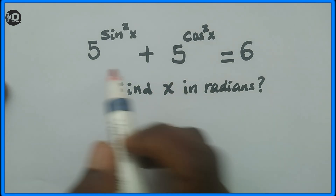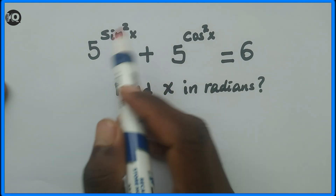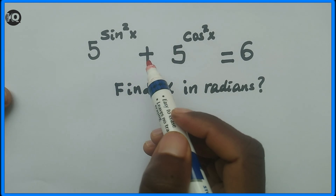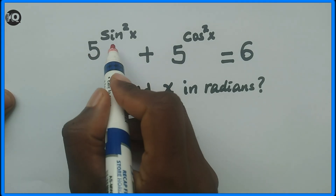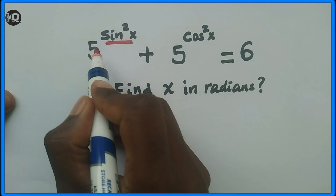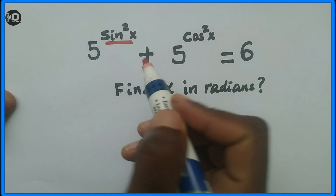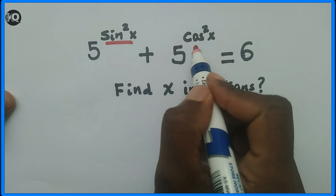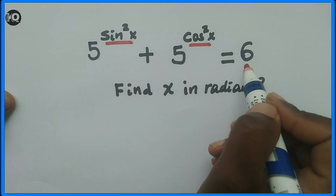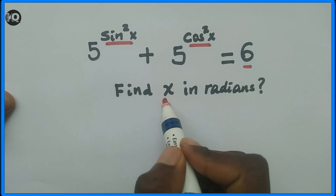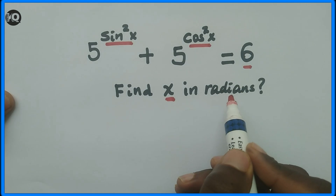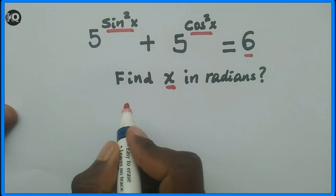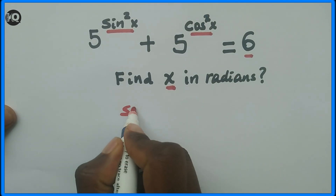Hello, welcome. We are going to solve this mathematical problem: 5 to the power of sine squared x plus 5 to the power of cosine squared x equals 6. Find the value of x in radians. Let's go to the solution.